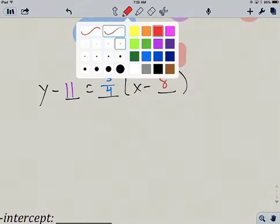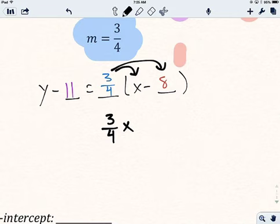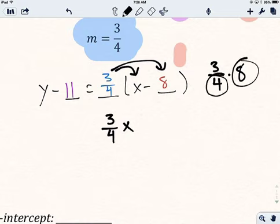There's basically two steps you have to take. To solve for y, you have to distribute and then solve for y by adding or subtracting. Let's start with the distribution. I'm going to multiply 3 fourths times x and 3 fourths times 8. 3 fourths times x is just 3 fourths x. 3 fourths times 8, I can do with mental math. I think of 8 divided by 4, so 8 divided by 4 is 2, and then multiply by 3. So 2 times 3 is 6. This would be minus 6.